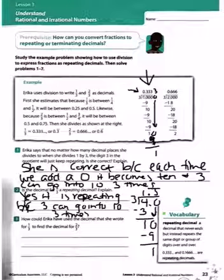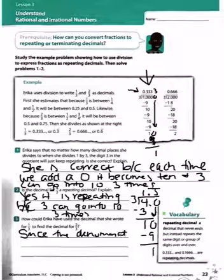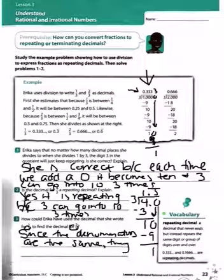Number 3. How could Erica have used the decimal that she wrote for 1 third to find the decimal for 2 thirds? Since the denominators are the same, they're both 3s, they will both be repeating decimals.